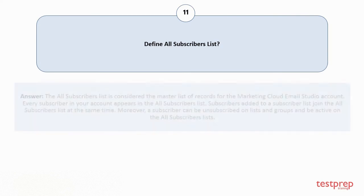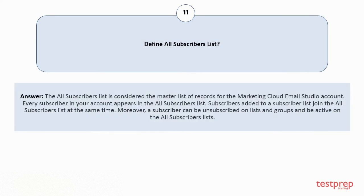Question number eleven: define the All Subscribers list. The All Subscribers list is considered the master list of records for the Marketing Cloud Email Studio account. Every subscriber in your account appears in the All Subscribers list. Subscribers added to a subscriber list join the All Subscribers list at the same time. Moreover, a subscriber can be unsubscribed on lists and groups and still be active on the All Subscribers list.